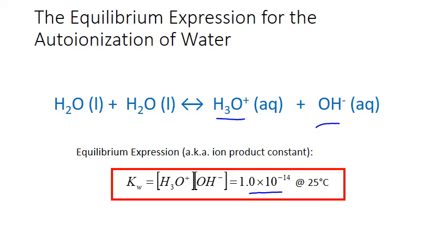The ion product expression gives us a way of relating hydroxide and hydronium ion concentrations in any aqueous solution. At equilibrium at 25 degrees Celsius — standard room temperature — the product of the hydronium ion concentration times the hydroxide ion concentration must always equal 1.0 times 10 to the negative 14. For this to hold, the two concentrations must be inversely proportional: as one goes up, the other must go down.